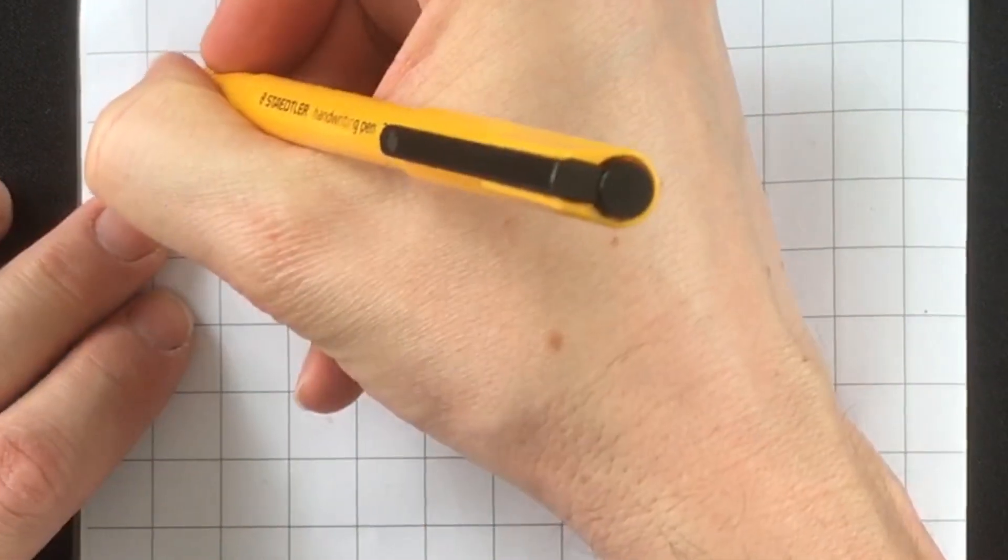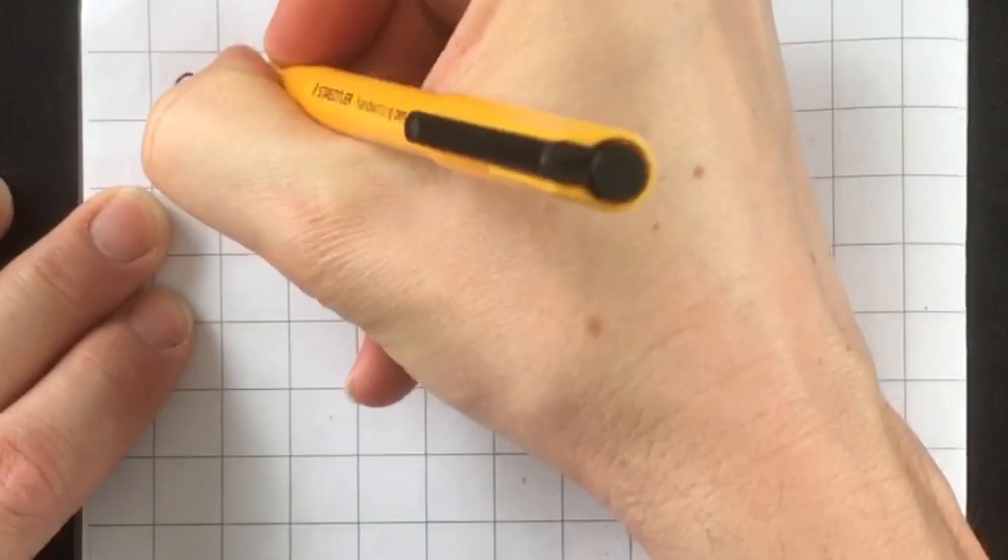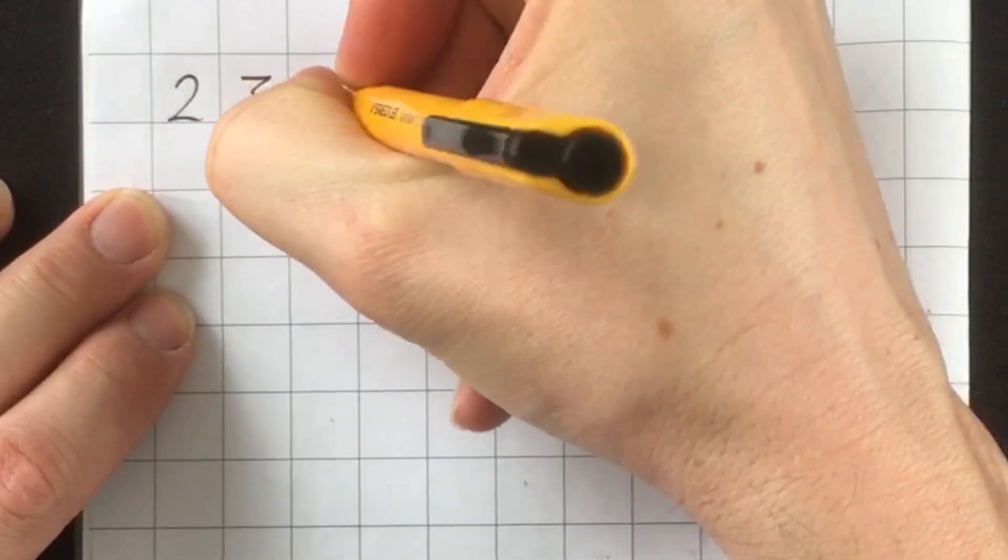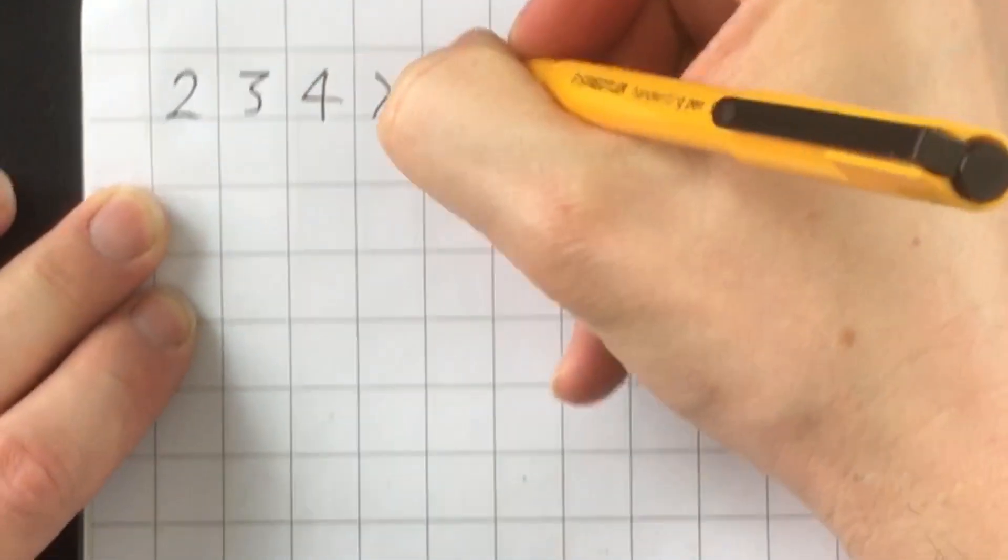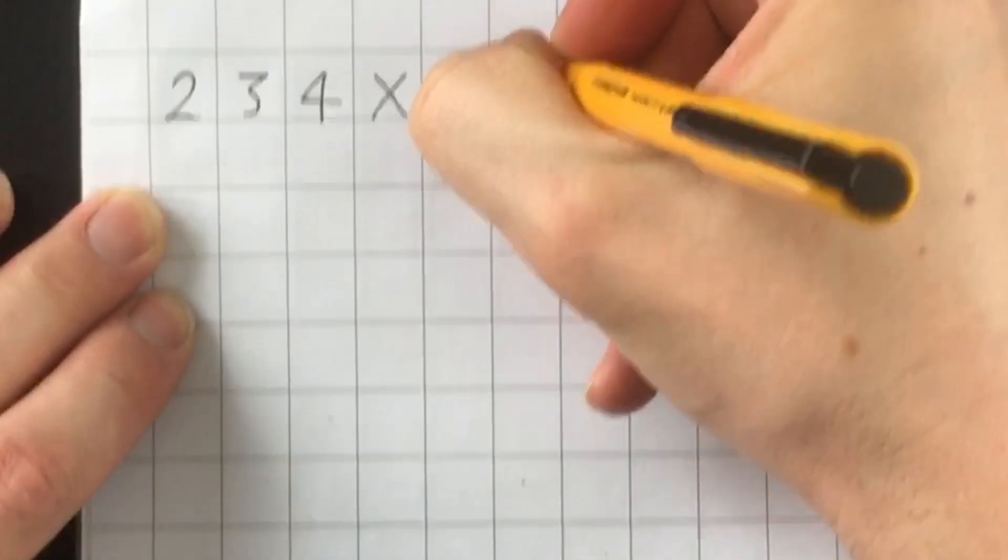So we're looking at a method here that goes back thousands and thousands of years. Before computers, before calculators, this was invented by the greatest mathematicians of ancient times to calculate massive numbers together on a massive scale. And right now I'm going to show you how to do it. I'm now going to demonstrate the method using this question: two hundred and thirty-four multiplied by thirty-eight.